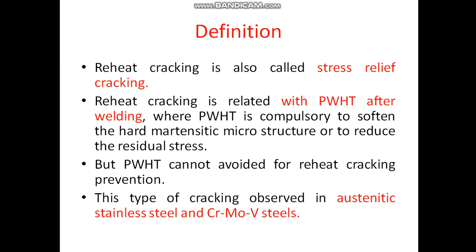By definition, reheat cracking is also known as stress relief cracking. It is related to PWHT after welding, because PWHT is done to soften the hard microstructure, produce a tempered martensitic microstructure, achieve useful mechanical properties, and reduce residual stresses. However, PWHT cannot be avoided for heat cracking prevention as it is a mandatory requirement. This type of cracking is observed in austenitic stainless steel and chrome-moly-vanadium steels.